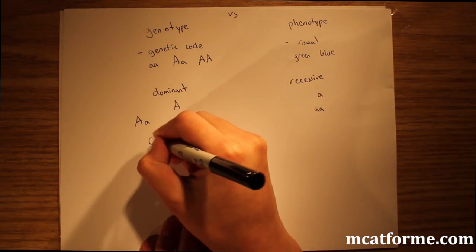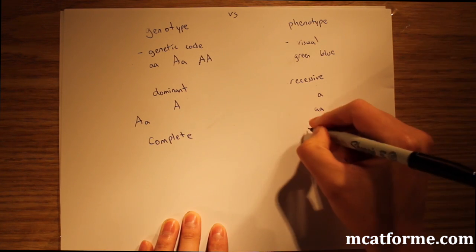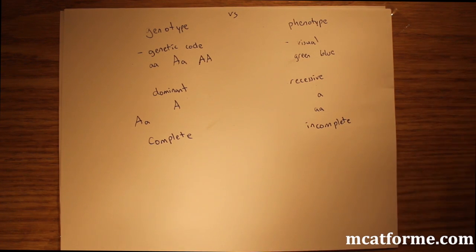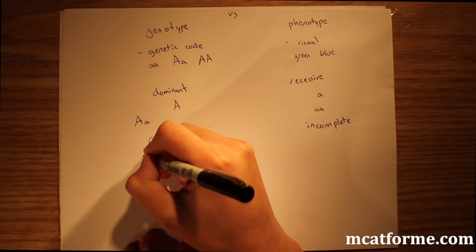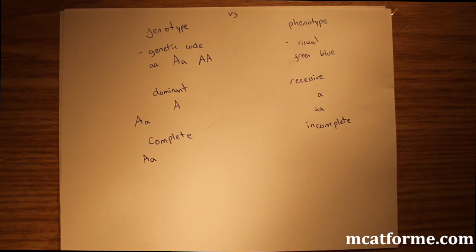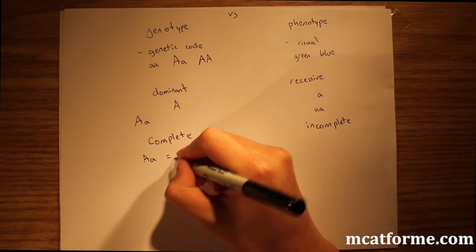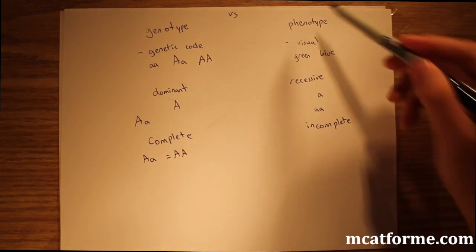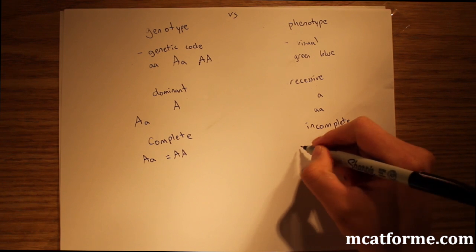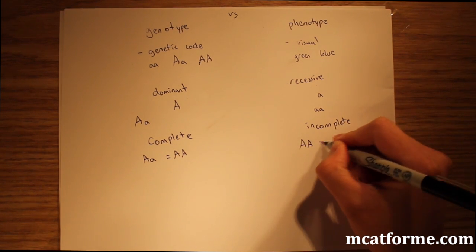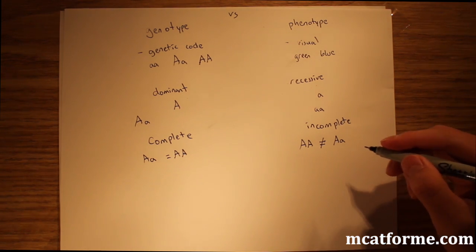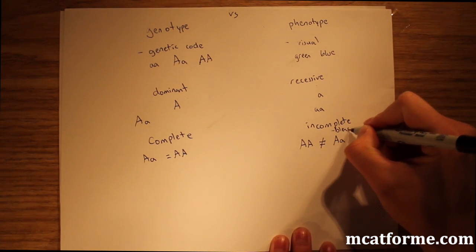Now we're going to look at complete versus incomplete traits. Complete dominance would be something where the heterozygote will be just completely dominant. So Aa is the same thing as AA in terms of phenotype versus incomplete dominance. Big A does not equal big A little a.